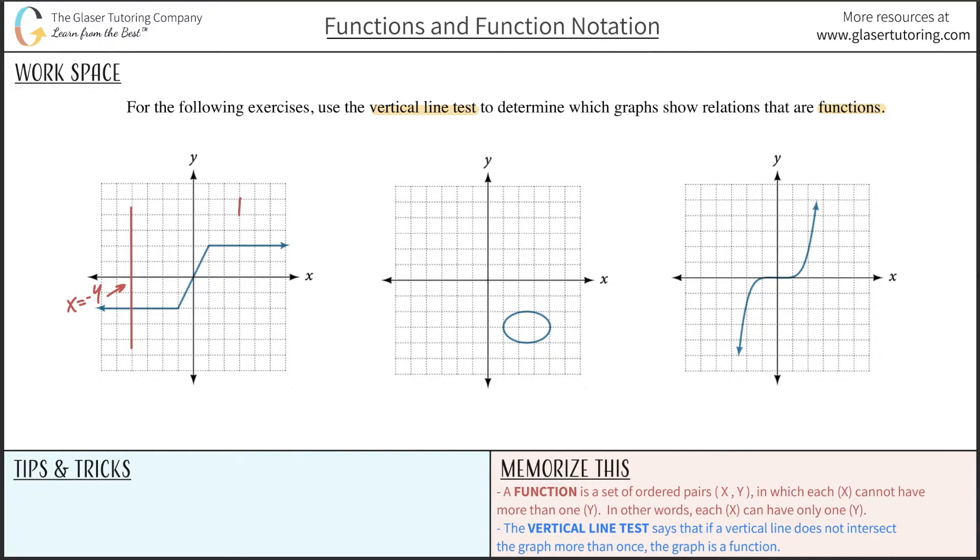Similarly, if I were to draw another line, let's say randomly here at x equals 3 roughly, there's also one solution there. Now based on the definition of function, it says right here each x can have only one y. That being the case, this proves the point that at this x value of negative 4, there's only one answer. At this x value of 3, there's only one answer as well. We can see that the pattern would continue, so this graph is indeed a function. That's the whole theory behind it.